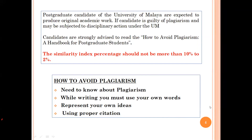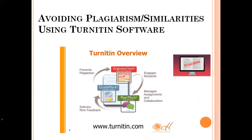To check your thesis using Turnitin: first, create a Turnitin account; then submit your thesis or manuscript; then review the originality report. The UM library website has an installation guide with everything you need. This is how you create your own account in Turnitin. Once you log in, you can submit your assignment by clicking the submit button, filling up the required fields, and uploading your file from your computer, Dropbox, or Google Drive.